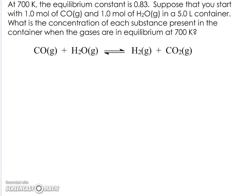This is a more challenging ICE table question. Let's take a look at it. At 700K, the equilibrium constant is 0.83. Suppose that you start - as soon as you say start, that's like initial.